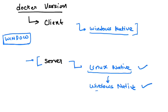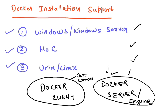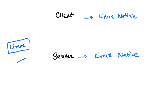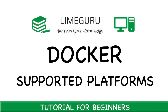To summarize: Docker can be installed on Windows, Windows Server, Mac, and Unix/Linux — with Linux being the most widely used. A Docker installation consists of a client, where you run commands, and a server where your containers run. The client and server use different native connectivity depending on whether you're on Windows, Mac, or Linux. I hope this concept is clear — do share the video and subscribe to Lime Guru channel. Thank you.